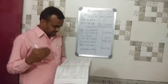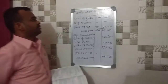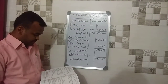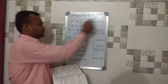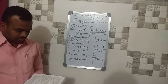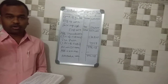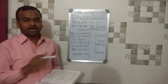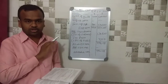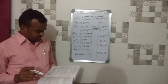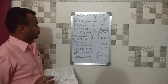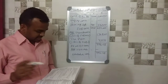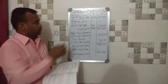Now we calculate the assessable value. For the configuration of assessable value, we use the exchange rate notified by the Board: one dollar is equal to sixty rupees.